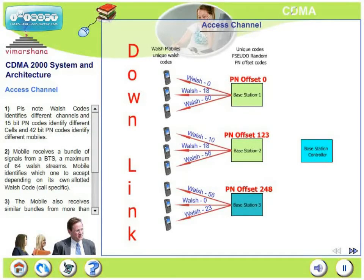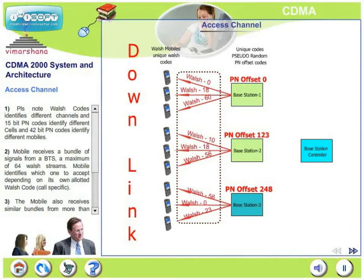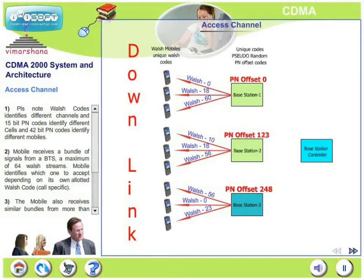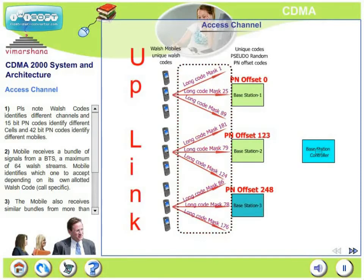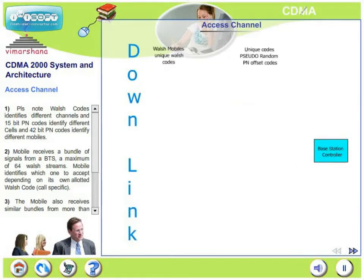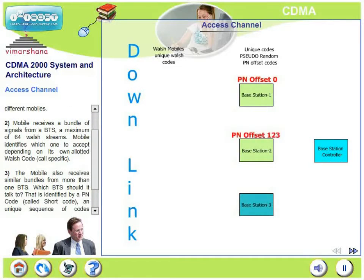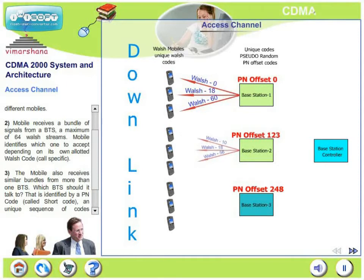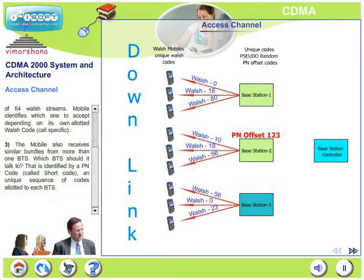Continuing with the access channel: Walsh codes identify different channels, 15-bit PN codes identify different cells, and 42-bit PN codes identify different mobiles. A mobile receives a bundle of signals from the base station — up to 64 Walsh streams — and identifies which one to accept depending on its own allotted Walsh code. The mobile therefore receives both desired and undesired signals from within one cell.